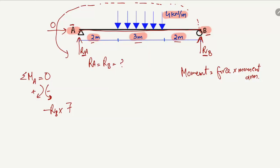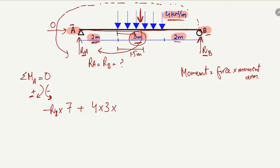The distributed load of 4 kN per meter creates a clockwise moment about point A, so it is positive. For a distributed load, we multiply the intensity by the distributed length: 4 kN/m multiplied by 3 m, then multiplied by the moment arm. The resultant of the UDL acts at the center of the 3 m span, which is 1.5 m from its start. Adding the 2 m offset from A gives a total moment arm of 3.5 m.